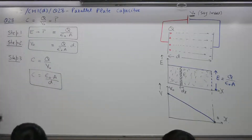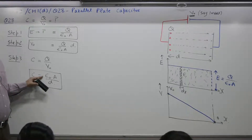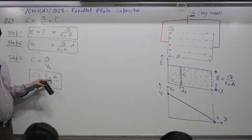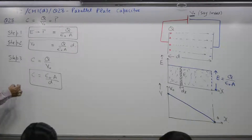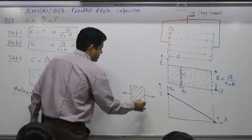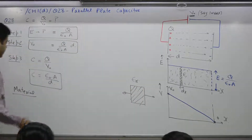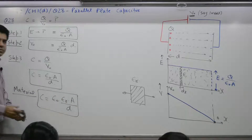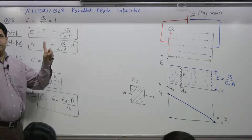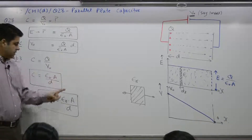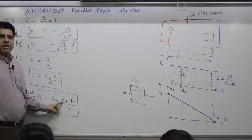Capacitance equals epsilon A by d. Epsilon is the permittivity of free space — its value is constant. A is the area of the plates, and d is the distance between the plates; these are the physical parameters. If there is a material between the two plates — such as oil or paper — having relative permittivity epsilon r, then capacitance equals epsilon naught times epsilon r times A divided by d. If nothing is mentioned, it is free space and epsilon r equals 1. For any material such as mica or oil, the examiner will give you the value of epsilon r — for example 6 — and you put epsilon r equal to 6. This is the relative permittivity of the material.